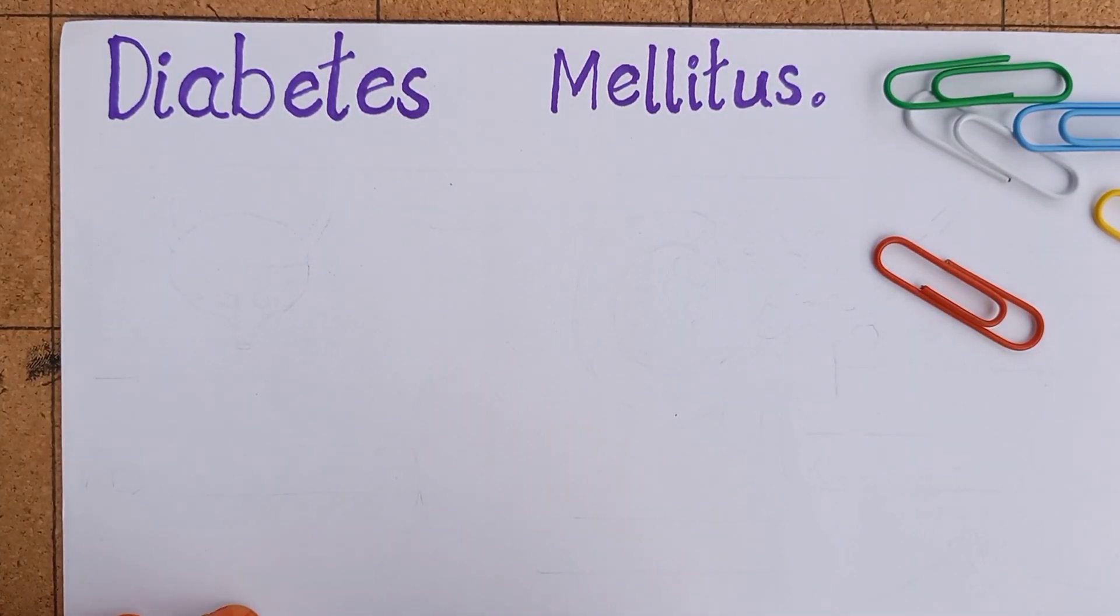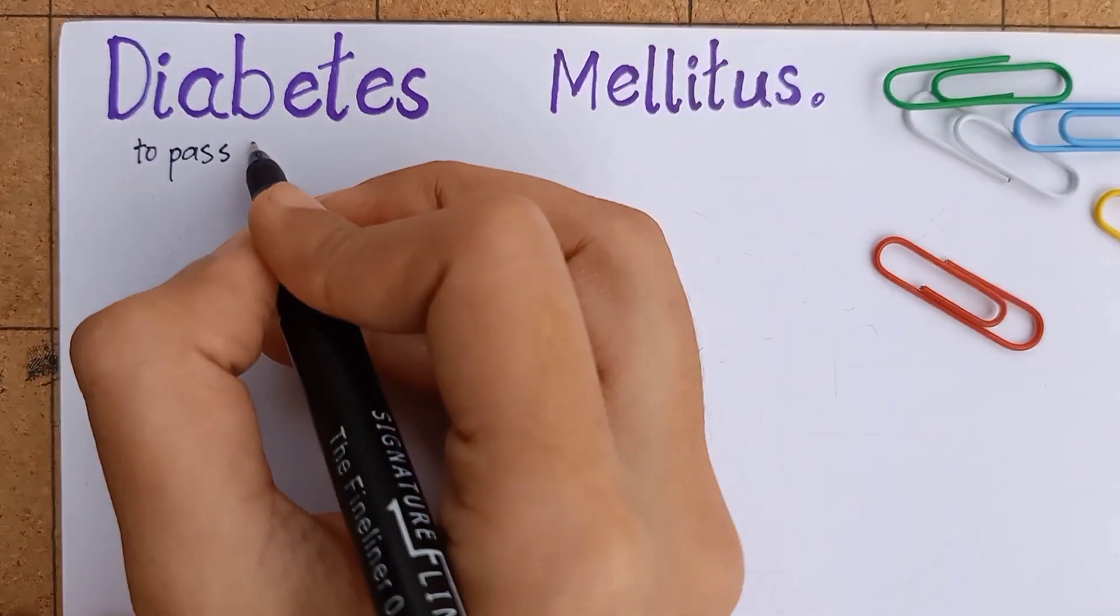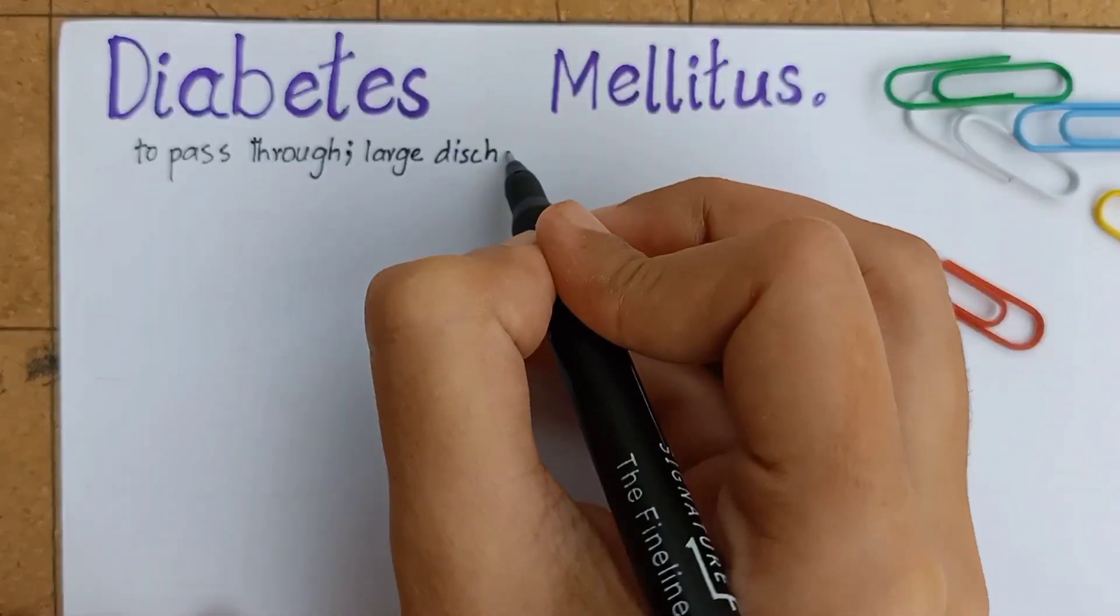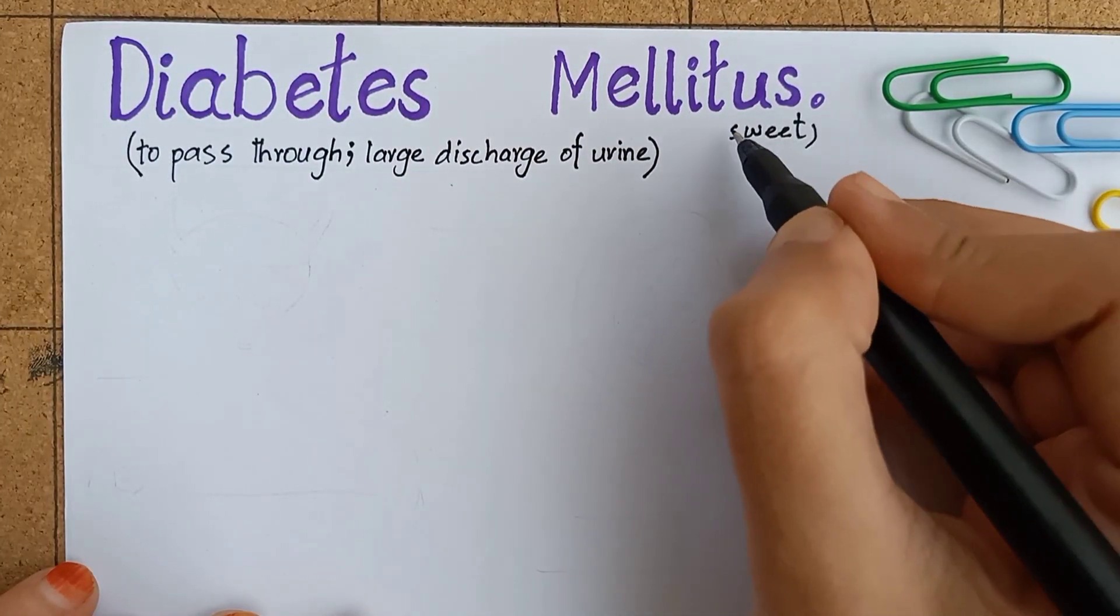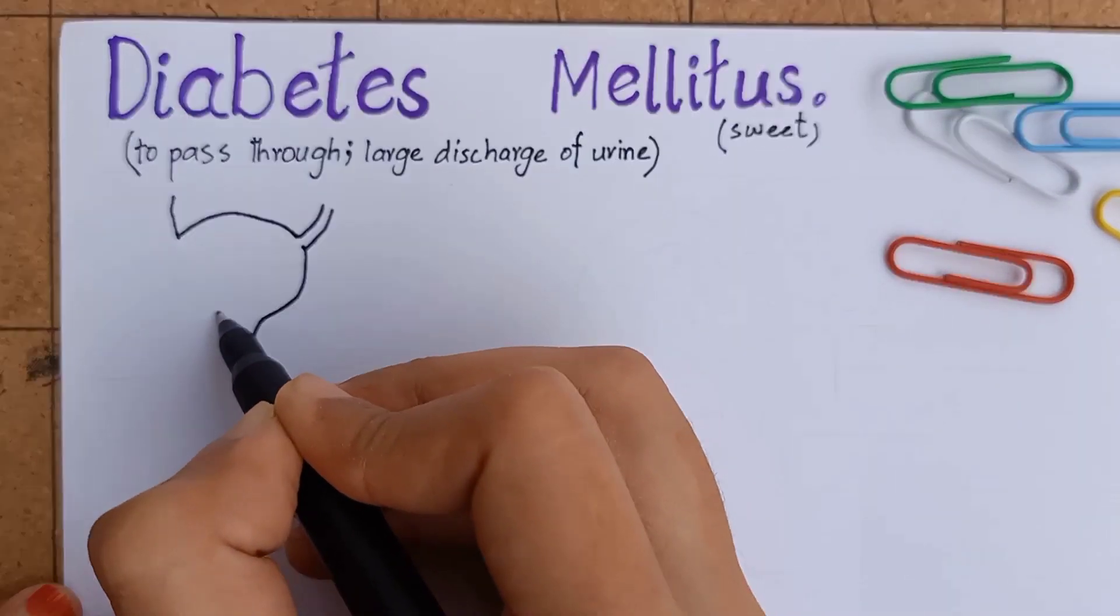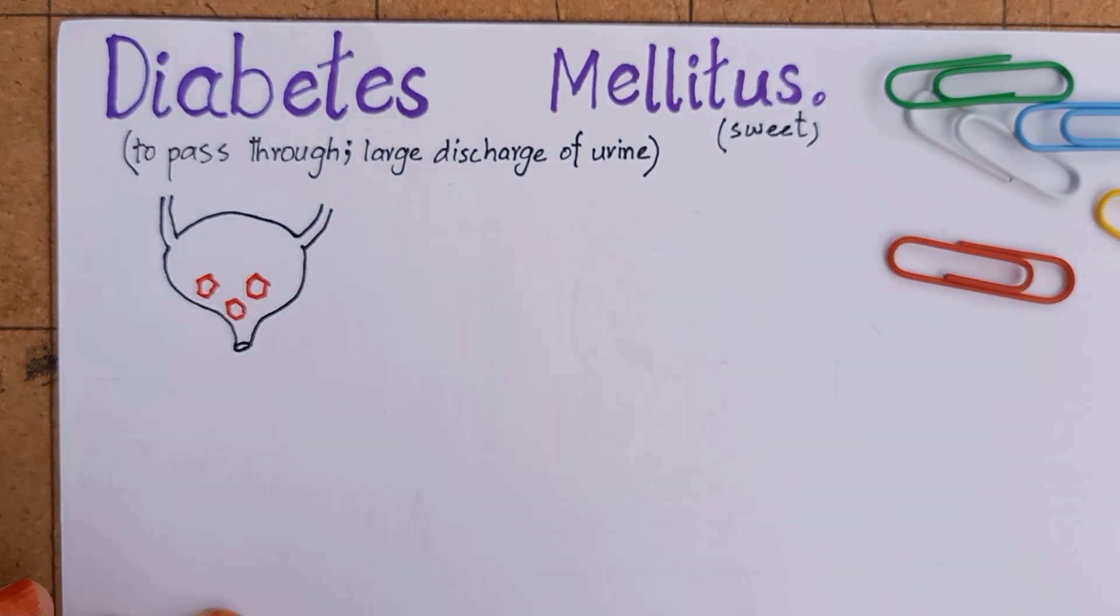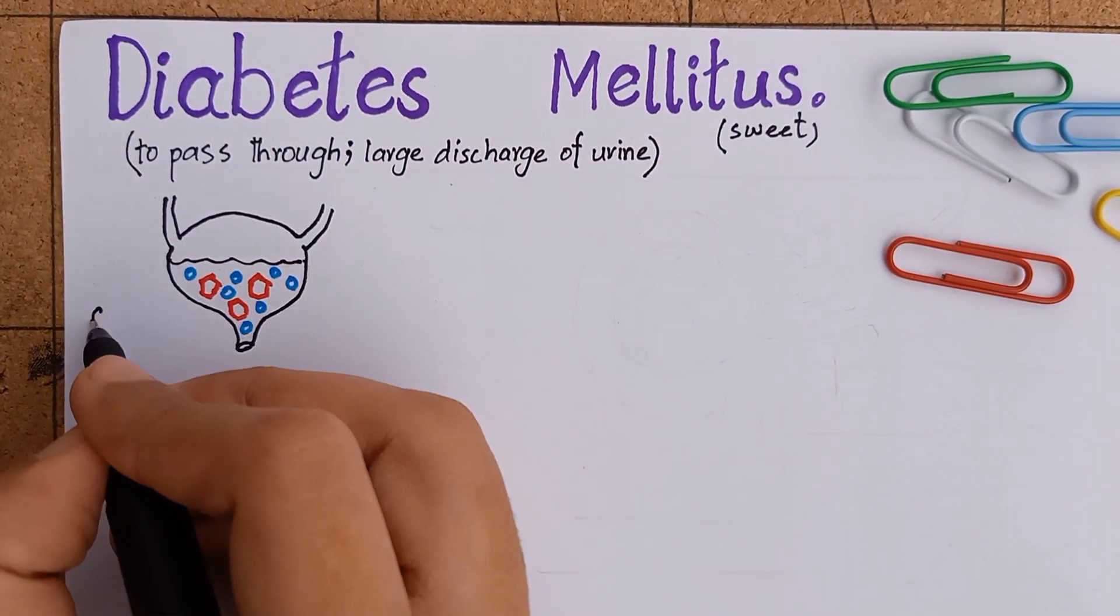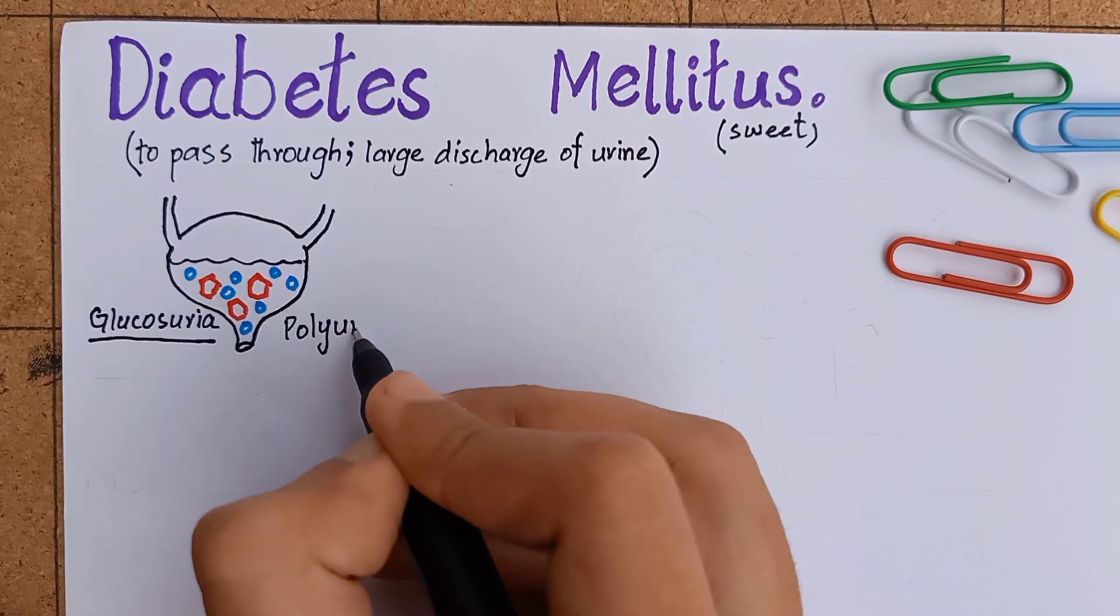Diabetes mellitus is made up of two words: diabetes, a Greek word meaning to pass through a large discharge of urine, and mellitus, a Latin word meaning sweet. As the name suggests, the literal meaning of diabetes mellitus is to pass large quantities of sweet urine—that is, glucose urea and polyurea—which is an important clinical manifestation of this disease.